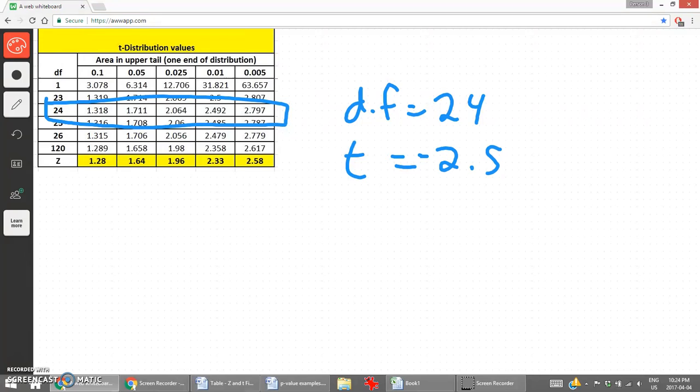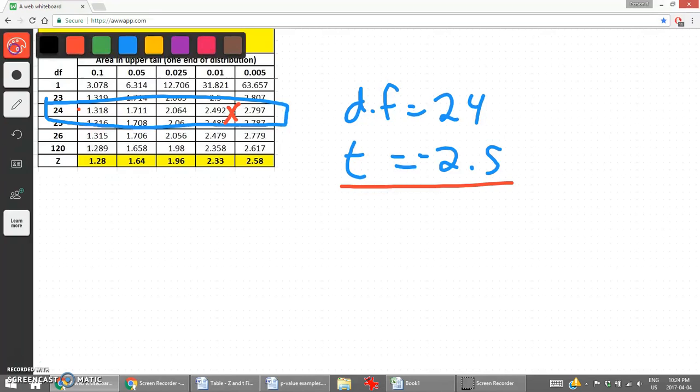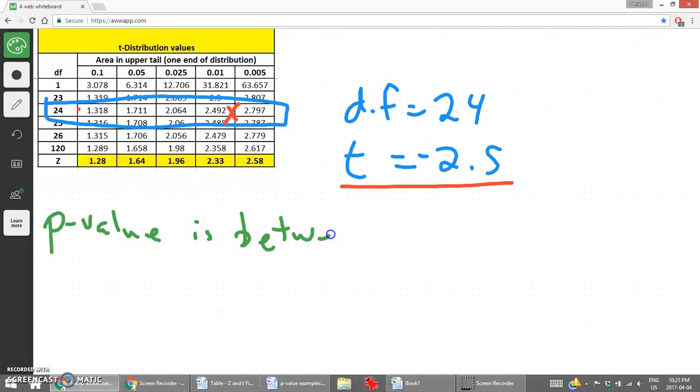And we're going to place this t value somewhere on that row. To help you understand how the values are listed out, they increase from left to right. So this value here 1.318 versus 2.797 on the upper end. So where does 2.5 fit on this scale? It's going to fit somewhere between those two values, 2.492 and 2.797, really close to that 2.492 value. So now we know that our p-value is between these values here, because our t value, our test statistic, is right in there.